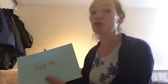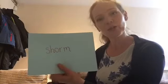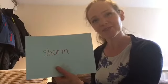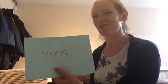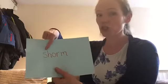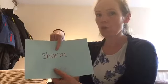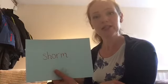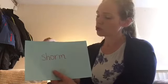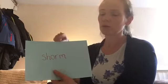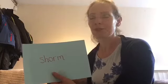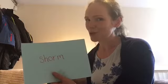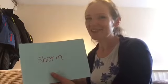Ooh, this one's tricky. It has two diagraphs in. Can you spot them? You got them? That's right. It's the SH. OR. MM. So we've segmented the word. Now let's blend it. SH. OR. SHORM. I'm not sure I know what a SHORM is. Is it an alien word? That's right. Well done, you.